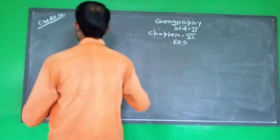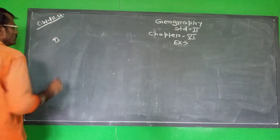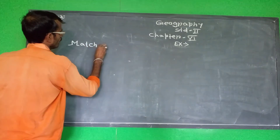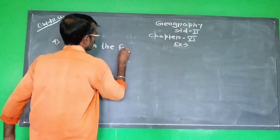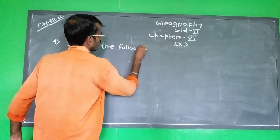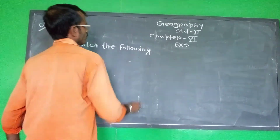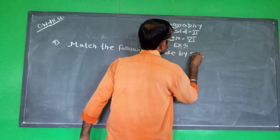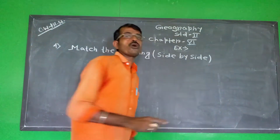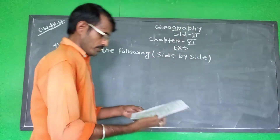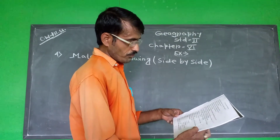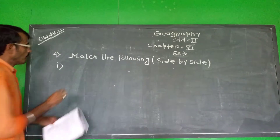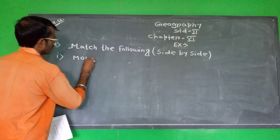Let's follow exercise number 4. Match the following, side by side. We saw the match side by side. Let's follow the exercise number 4 — left side: 1. Mountain.